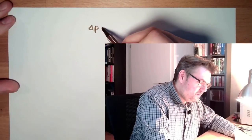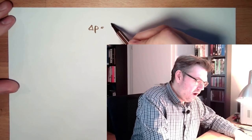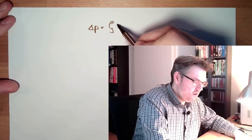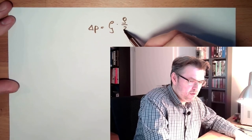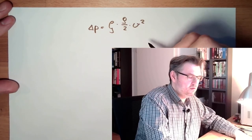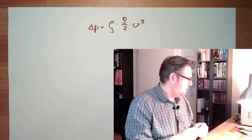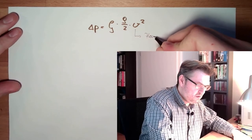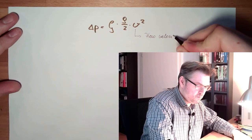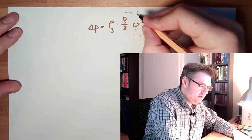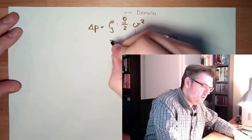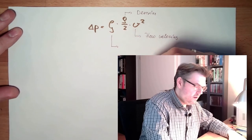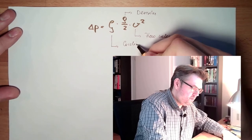The pressure loss in the piping, delta p, can be calculated from a friction coefficient multiplied by the density of the liquid and the streaming velocity squared. This was the formula: this is the flow velocity, this is the density, and this here is the friction coefficient.